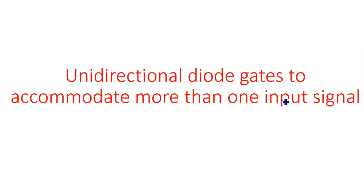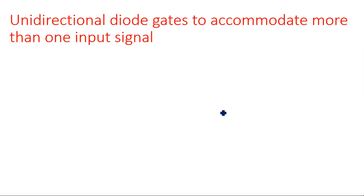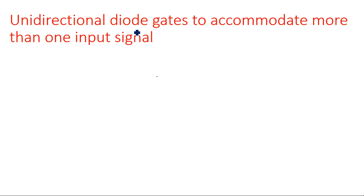In this video I am going to explain about unidirectional diode gates to accommodate more than one input signal. In the previous video we saw a diode with a single capacitor and single resistor, with a load resistor, taking the output voltage across that resistor. That was called a unidirectional sampling gate — or unidirectional diode gate — because we are transmitting the signal in only one direction, in only one polarity.